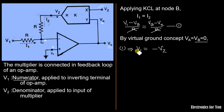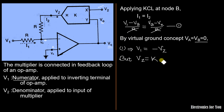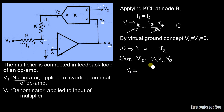We know that Vz is the output of the multiplier, which has two inputs with output k times Vx times Vy. Here Vx is V2 and Vy is Vo, so Vz equals k times V2 times Vo. Substituting the value of Vz into equation one, we get V1 equals minus k times V2 times Vo.